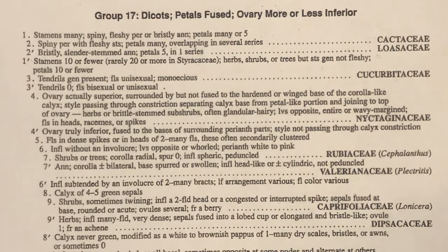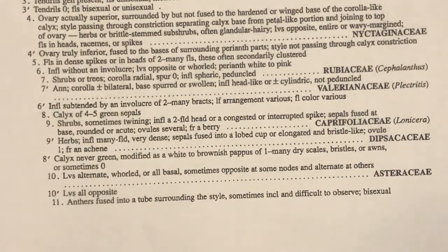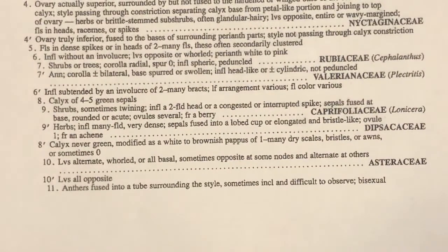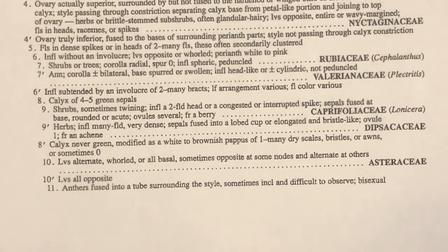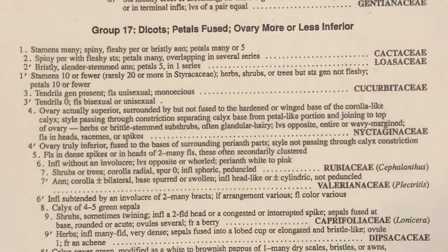Group seventeen highlights that all plants in this group are dicots with two seed leaves, petals fused forming a corolla tube, and the ovary usually inferior. You can see families listed here: the cactus family, the cucumber family, Caprifoliaceae — and further down, Asteraceae. If you already knew your plant was Asteraceae, you'd see it and go 'bingo.' Also remember: in your plant collection you can only have one specimen per family.